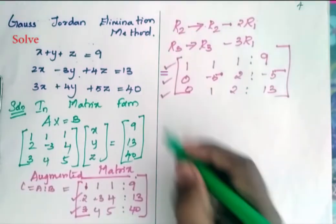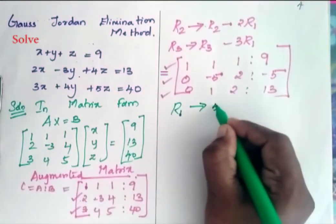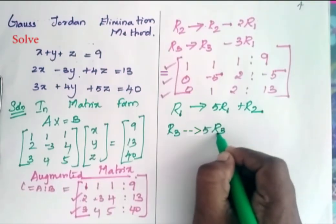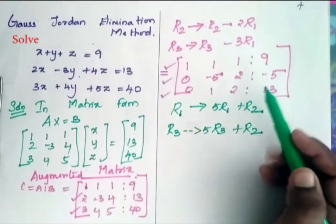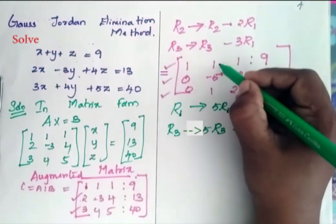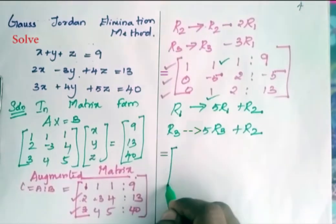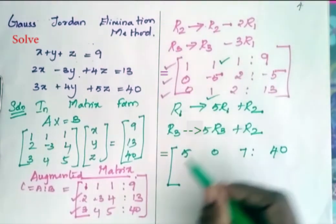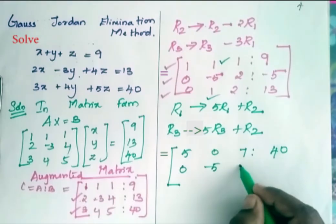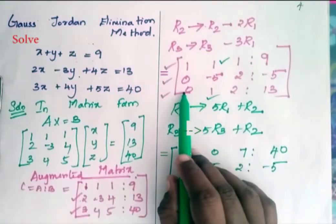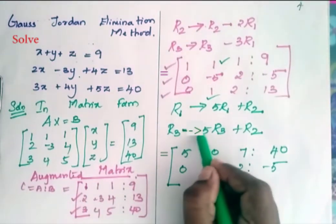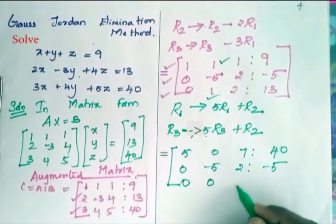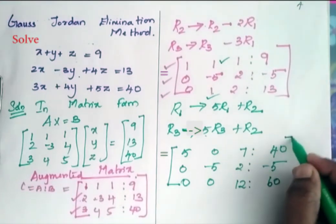My next transformation is R1 = 5·R1 + R2 and R3 = 5·R3 + R2, so that I get zeros in the second column. After applying these, my matrix becomes: R1 = [5, 0, 7 | 40], R2 remains unchanged as [0, -5, 2 | -5], and R3 = 5·R3 + R2 gives [0, 0, 12 | 60].